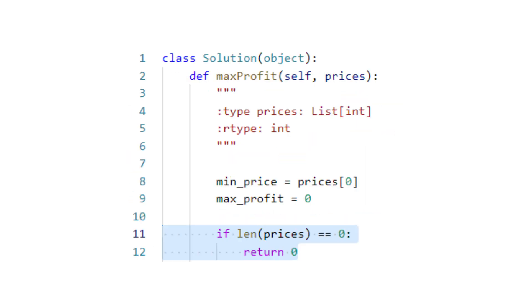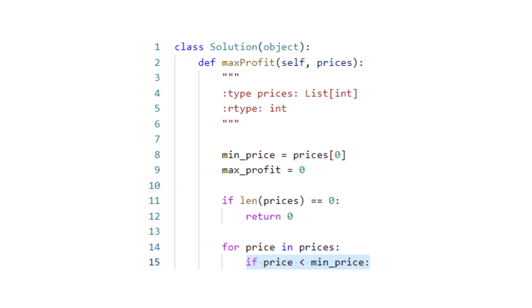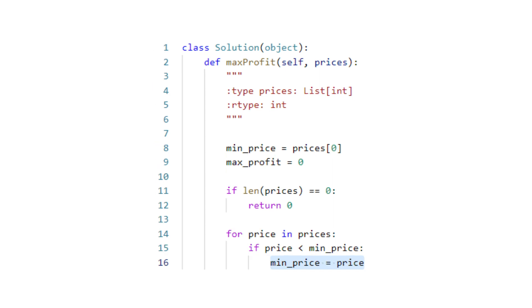If the prices array is empty, we can directly return zero profit. Else, for each price in the array, we check if the current price is less than the minimum price we have seen so far. If it is, we update the minimum price to be the current price.